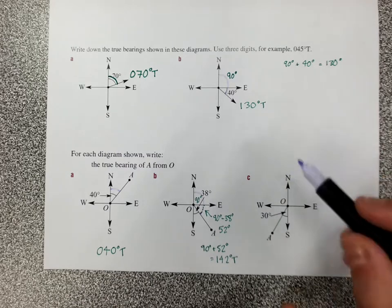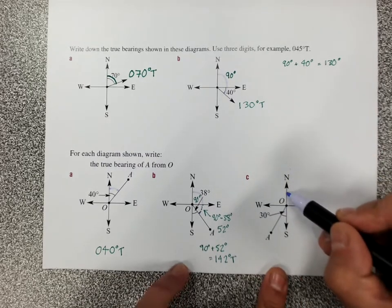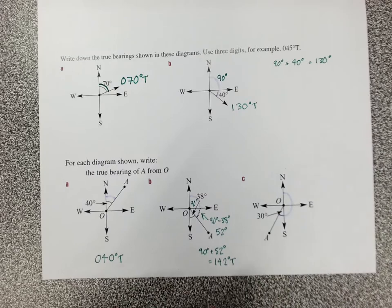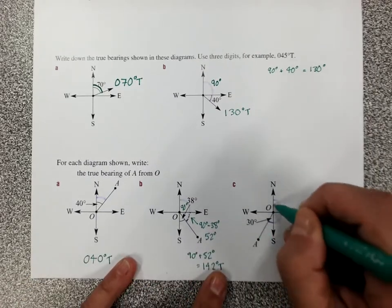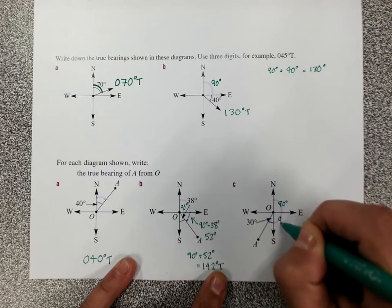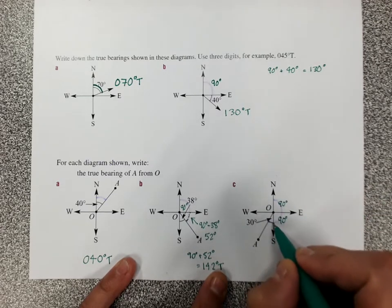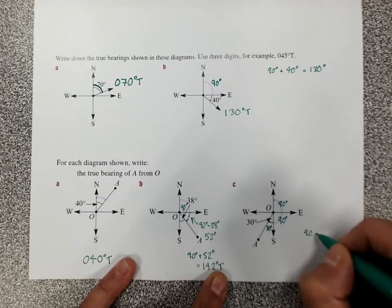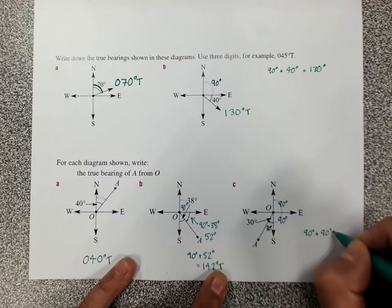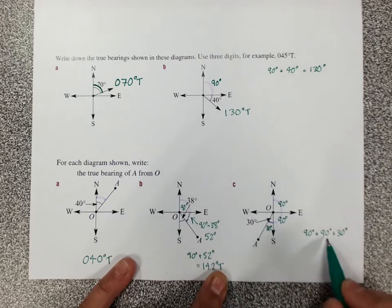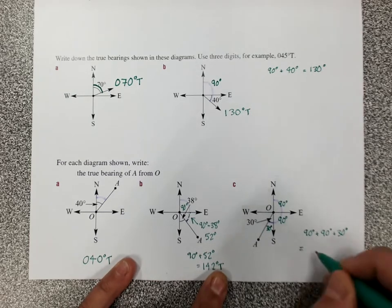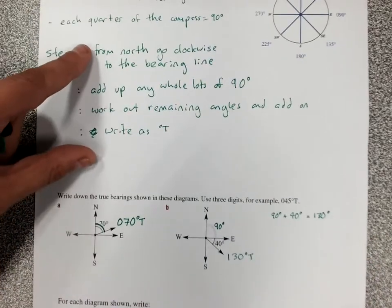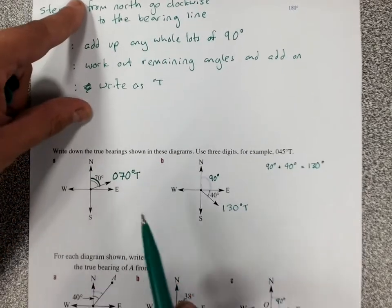Have a look at this next one. From O go north, draw all the way around to the bearing line, and I've got to get every single one of those parts of the angle. This one's 90 degrees. This one's a full quarter so that's 90 degrees, and this bit in here is 30 degrees. So I'll have to add all of those up. 90 plus 90 plus 30, so that's 180 plus 30, is 210 degrees true. Follow these steps to change the bearing to a true bearing. So thank you.